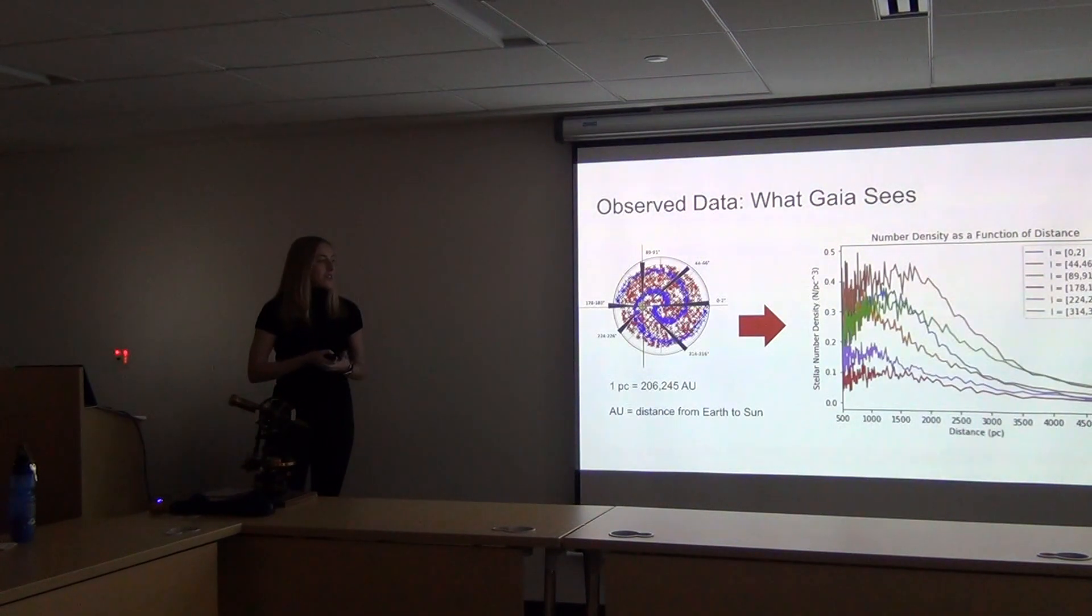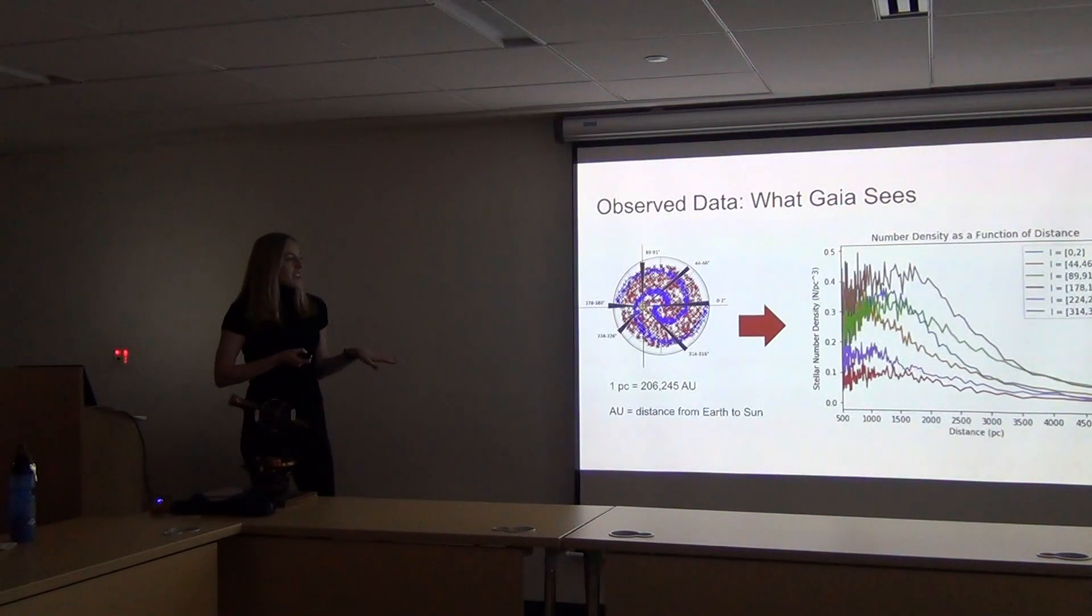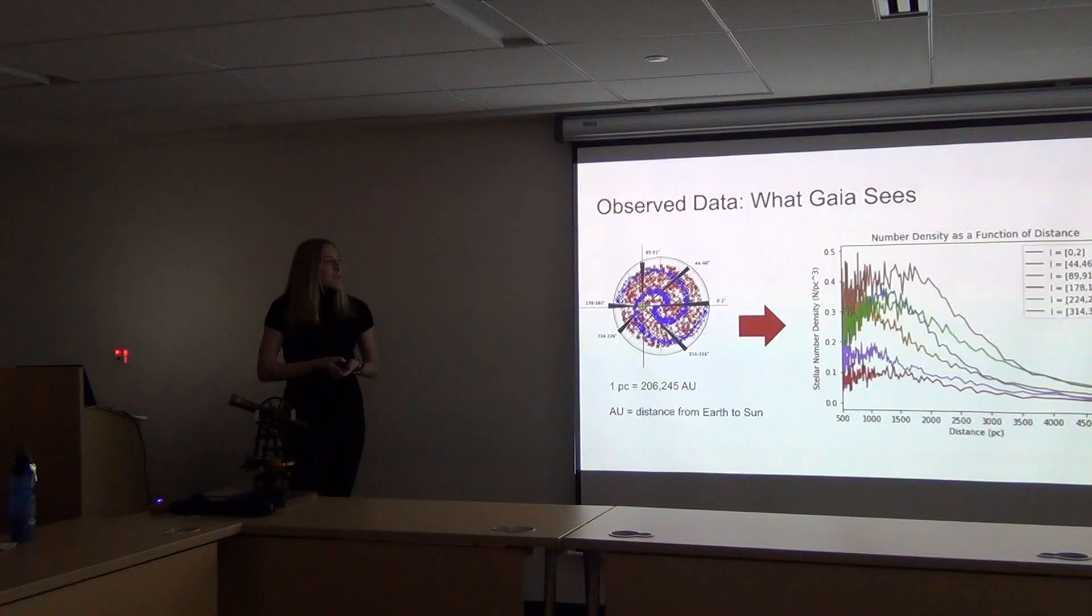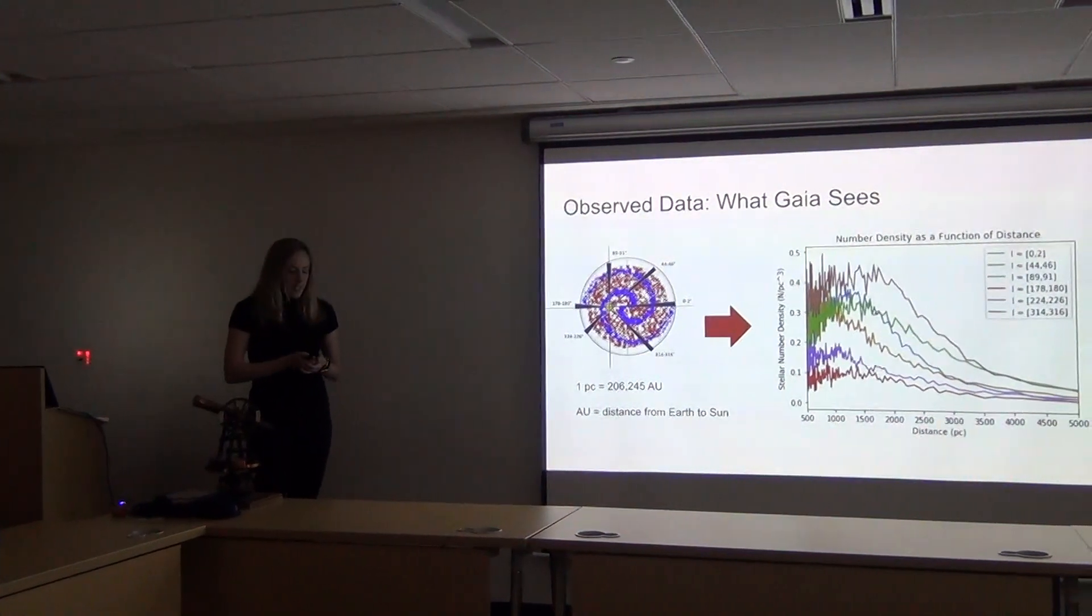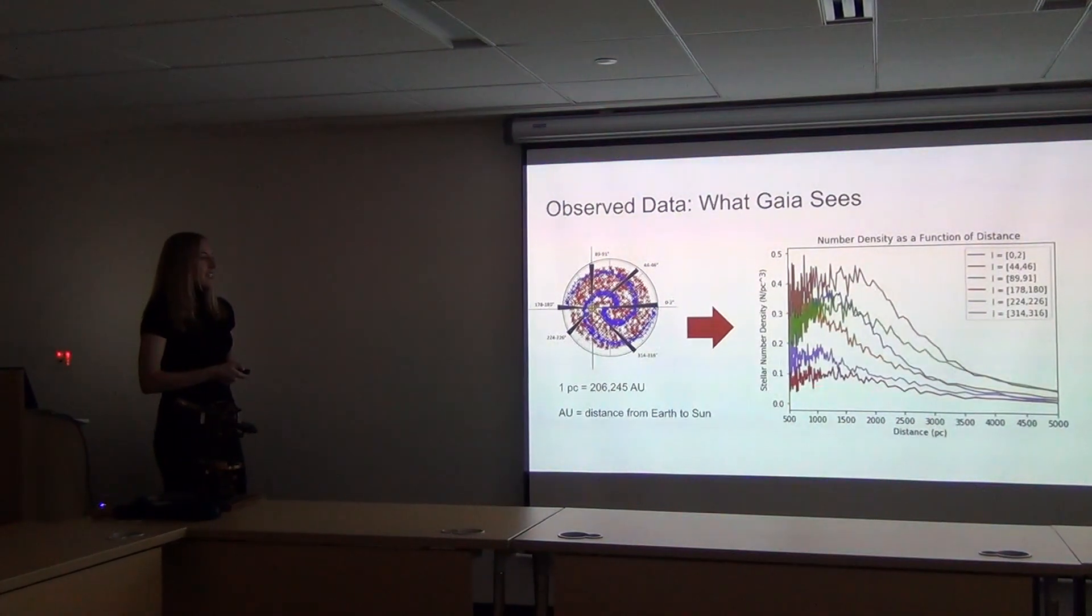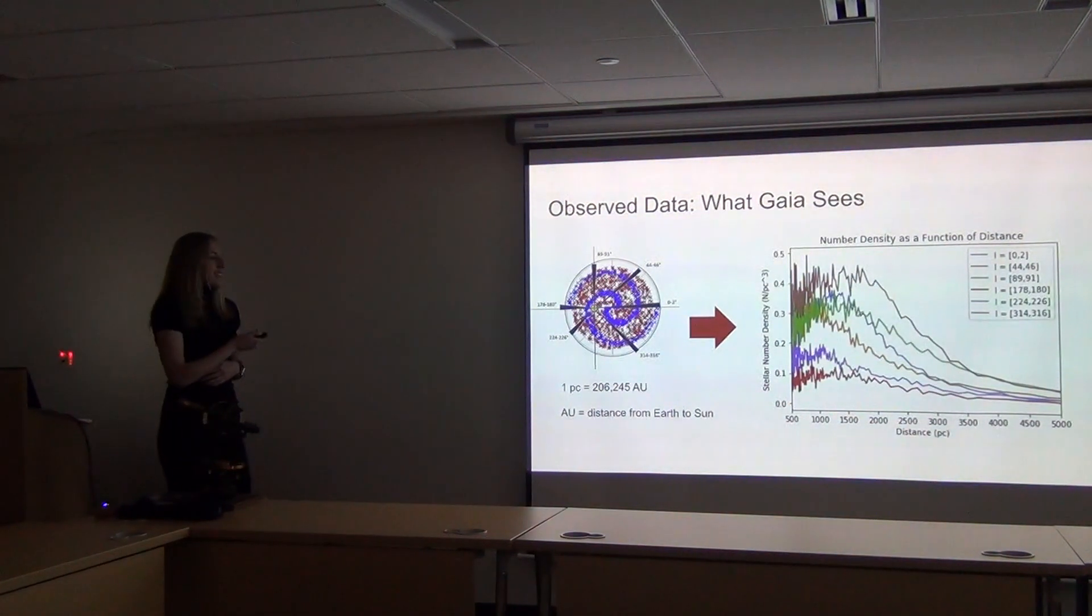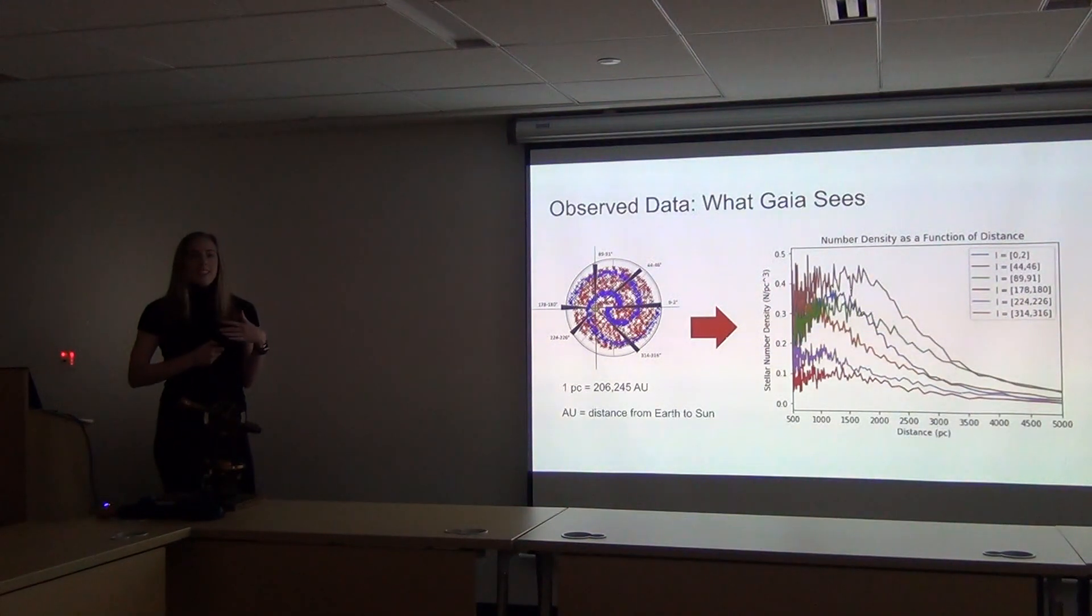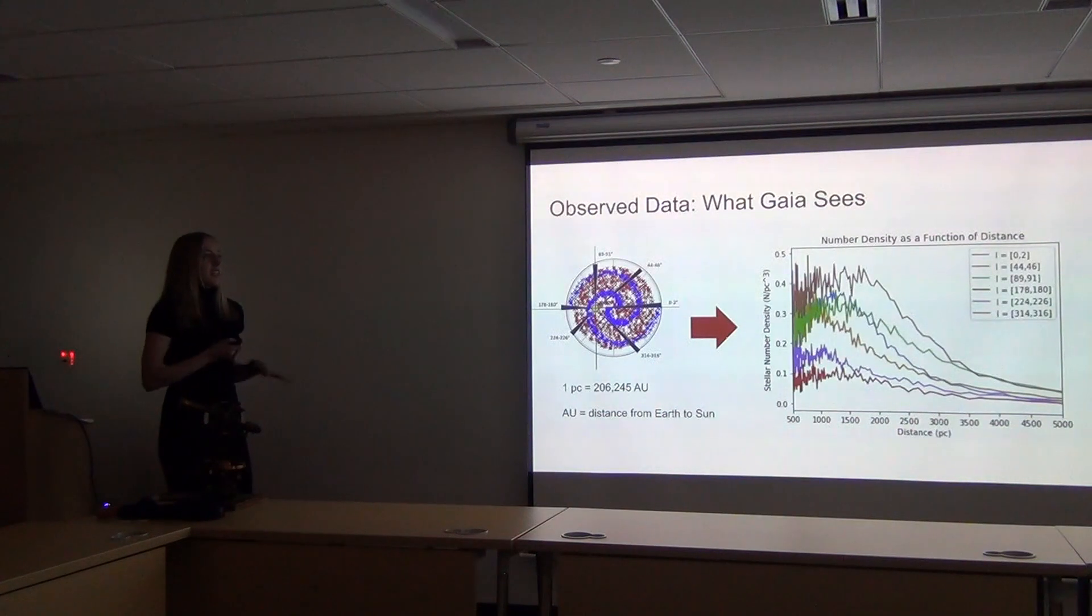And this is what we found. The x-axis here is distance in parsecs, and the y-axis would be the number of stars per volume. You can see this red line here is the anti-galactic center. We're looking away from those areas of highest stellar density, so it makes sense that it would be a flat curve, not much change in density.